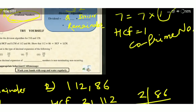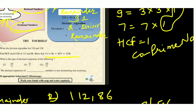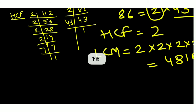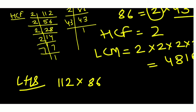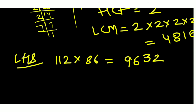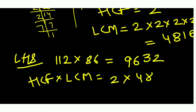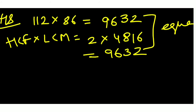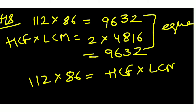The question also asks to verify that 112 × 186 = HCF × LCM. On the left-hand side, 112 × 186 = 9632. On the right-hand side, HCF × LCM = 2 × 4816 = 9632. Both sides are equal, so the relation is verified.